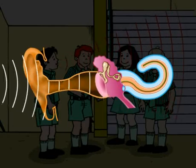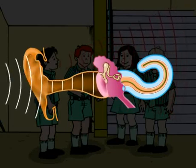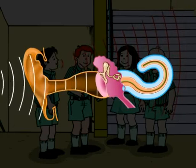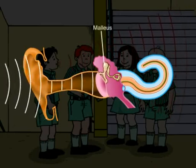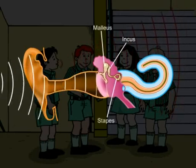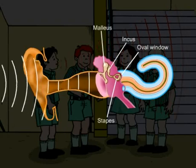These vibrations of the eardrum are transmitted to the ear ossicles — malleus, incus, and stapes — and finally to the oval window.